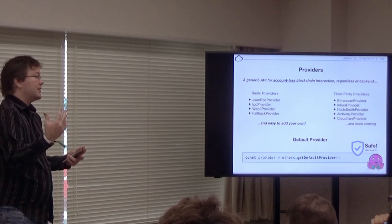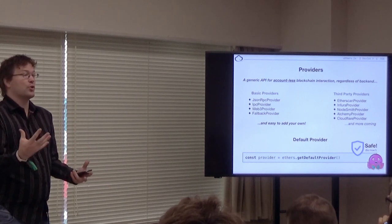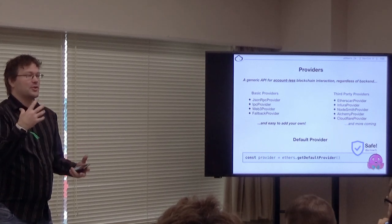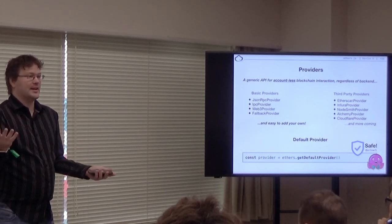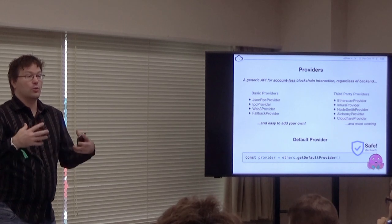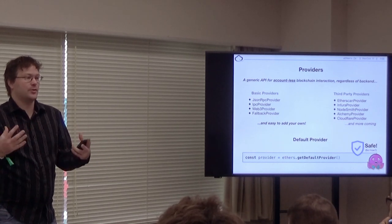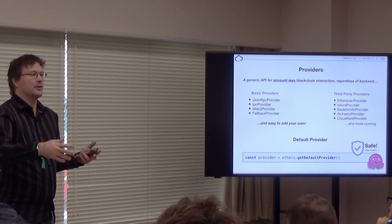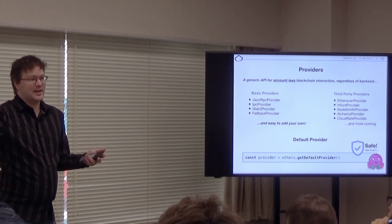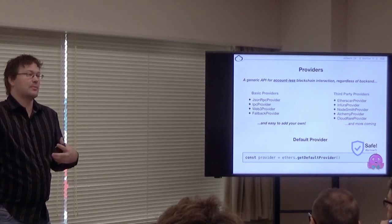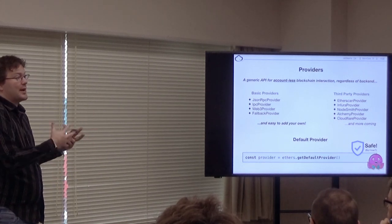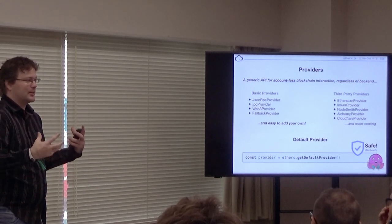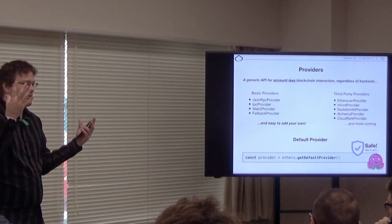So this means that the classic example I worry about in terms of an attack vector, so people who are familiar with ENS, you can ask, what address should I send this ether to for ricmoo.eth? If I was an attacker, I would just hijack Infura and make it always return the attacker's address. Every time you send ether to anyone, it goes to that person. So this means you'd have to compromise two of these random sources to kind of compromise the system as a whole.